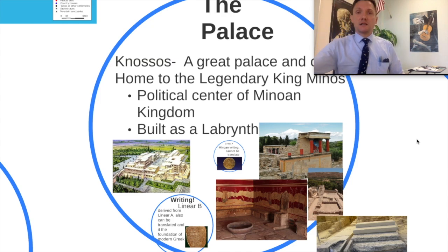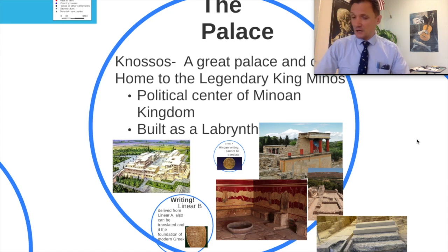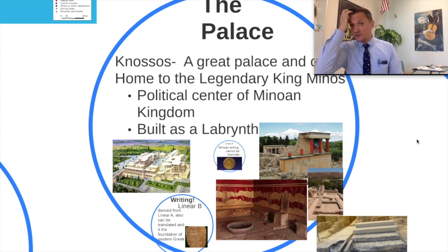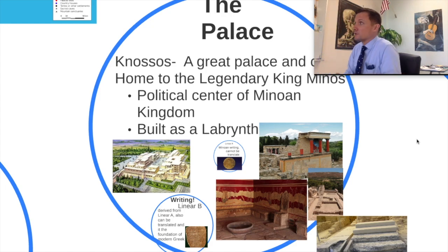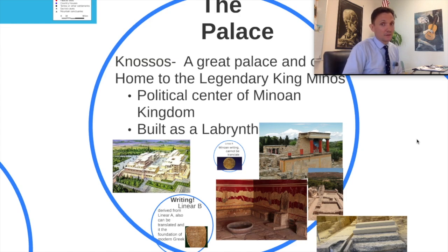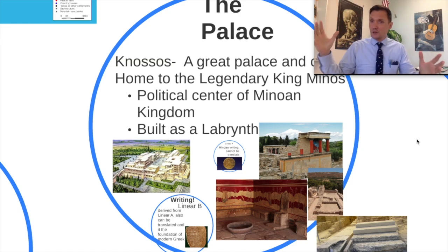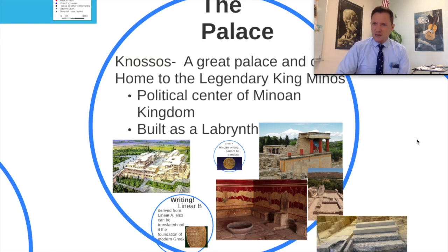So today in class we reviewed our ancient Greek time periods, all eight of them. We made sure everybody has them written down. We talked about the map quiz, which all of you are going to have on Monday, which is Green Day — except for my F period, who will have it on Tuesday. They're going to be doing a lot of other stuff on Monday as well, on our respective Green and White Days.